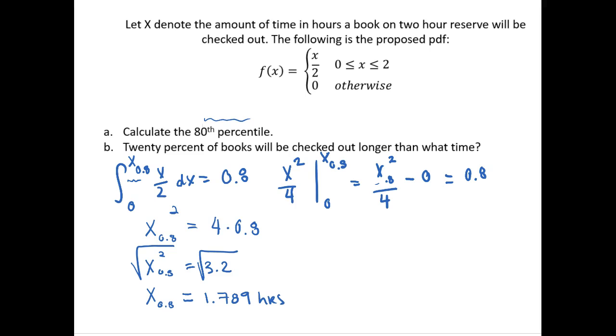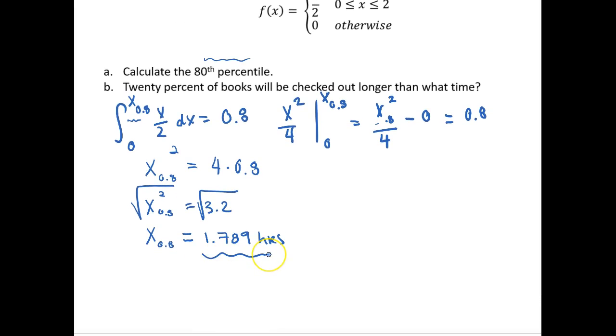So 20% of books will be checked out longer than 1.789 hours, or if we wanted to make it more in context of our problem we could say 20% of the books will be checked out longer than 1 hour 47 minutes.